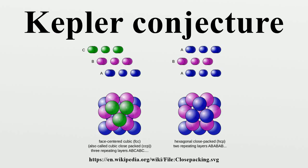Kepler did not have a proof of the conjecture, and the next step was taken by Carl Friedrich Gauss, who proved that the Kepler conjecture is true if the spheres have to be arranged in a regular lattice. This meant that any packing arrangement that disproved the Kepler conjecture would have to be an irregular one. But eliminating all possible irregular arrangements is very difficult, and this is what made the Kepler conjecture so hard to prove.